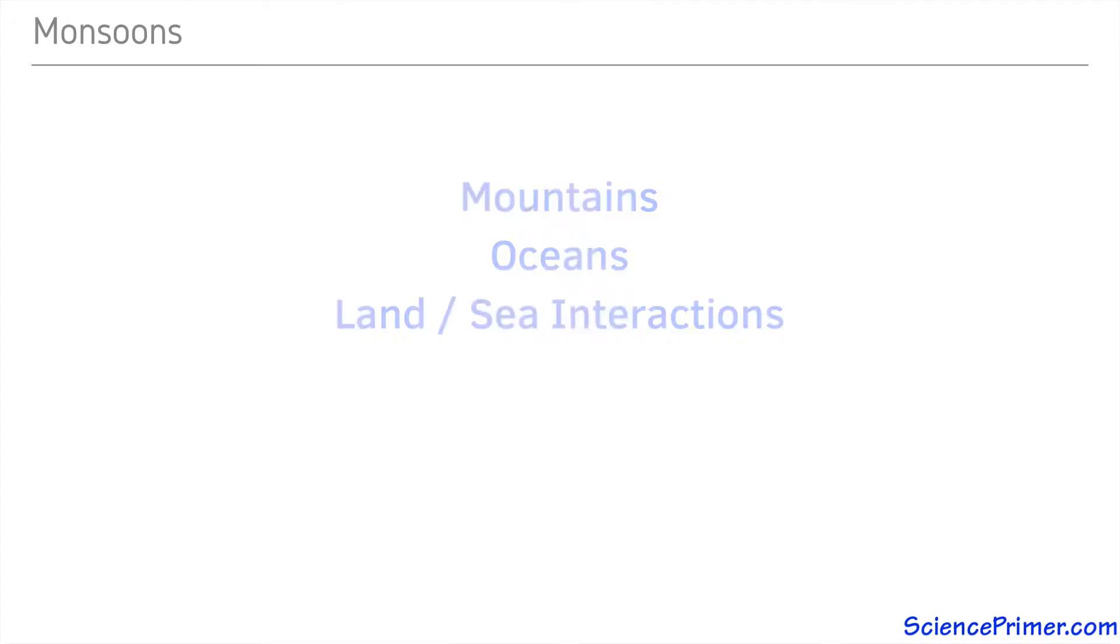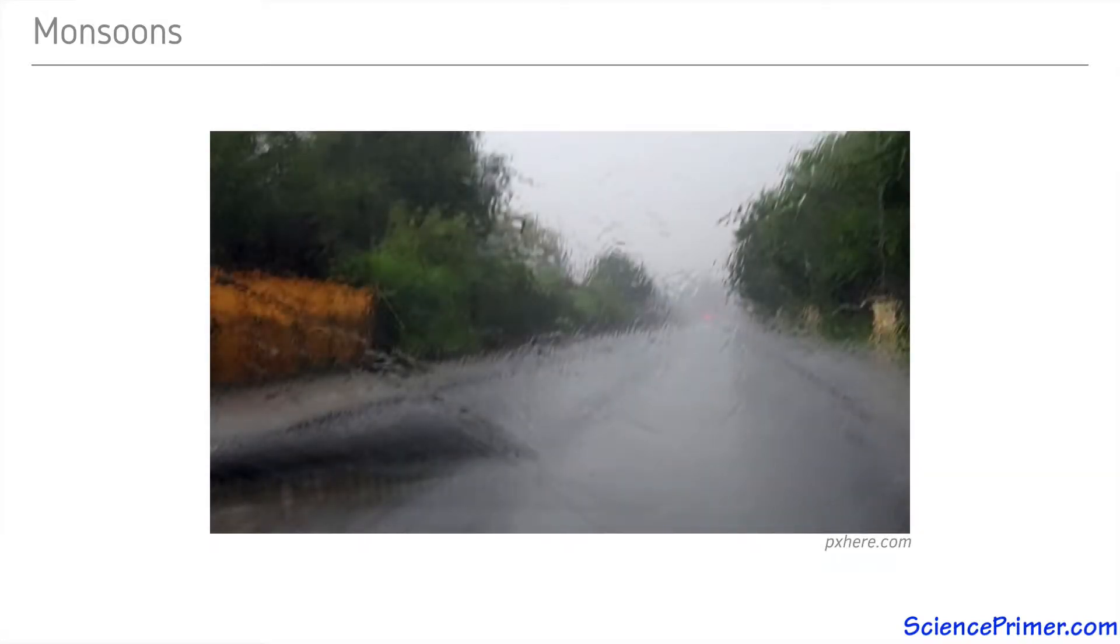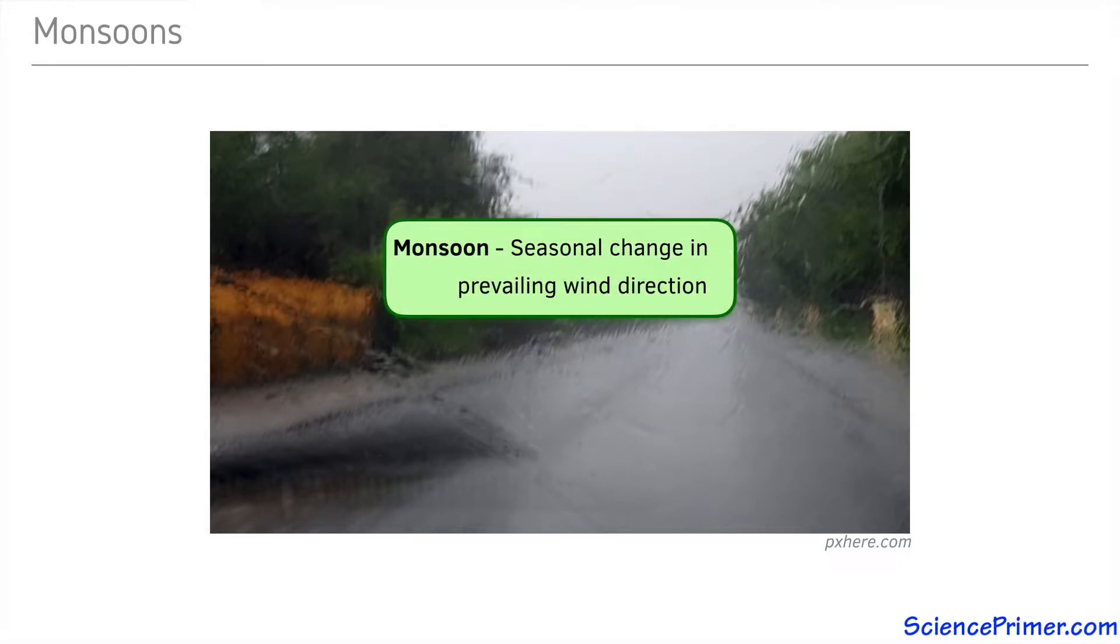One type of large regional pattern found in several parts of the world is the seasonal monsoon cycle. Most people associate the term monsoon with heavy rainfall, and while heavy rainfall can occur during parts of the monsoon cycle, the term actually describes a particular type of seasonal change in the prevailing wind direction.